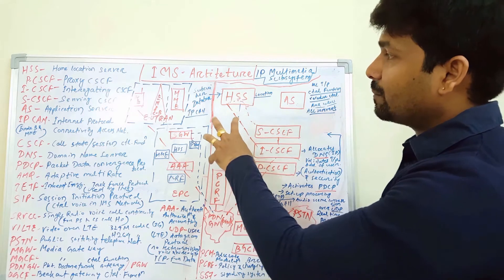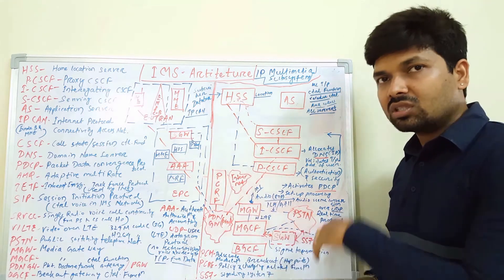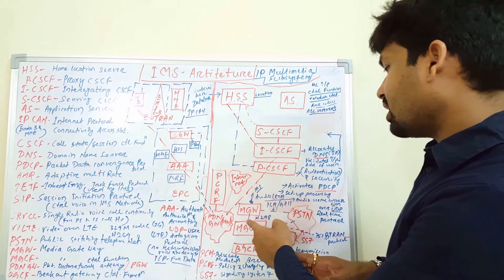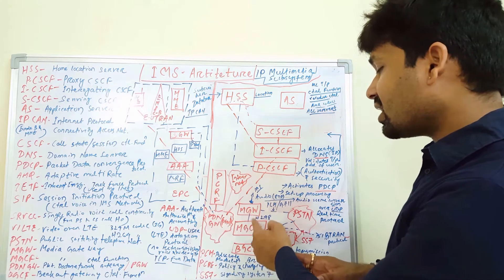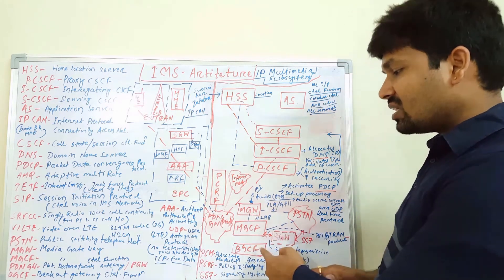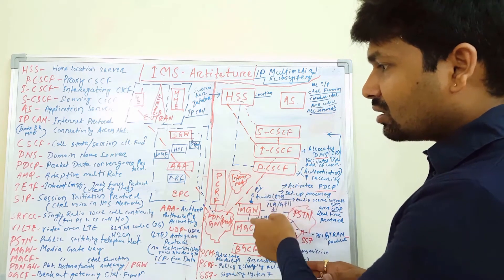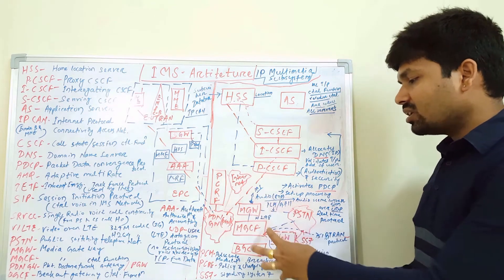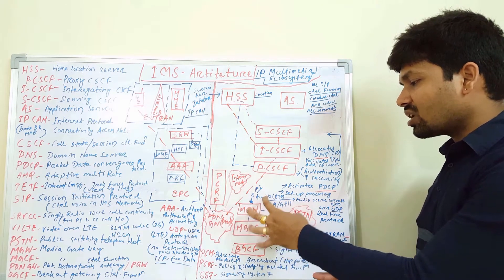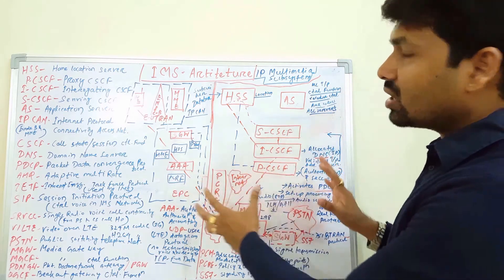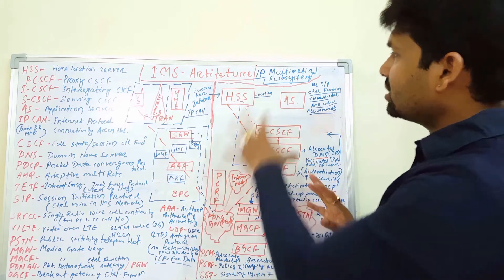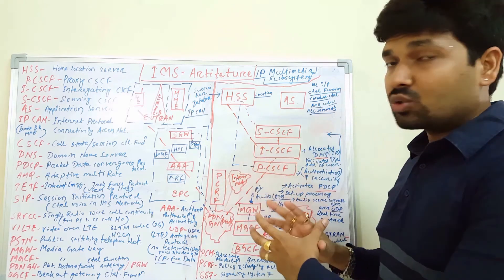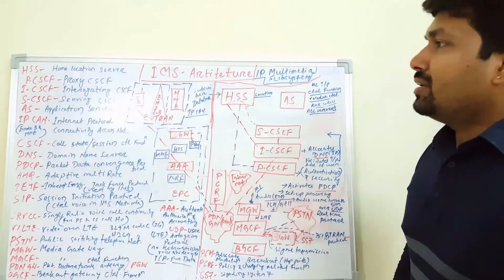If we establish a call from one network to the PSTN, or the public switch telephone network, we will require the MGCF — media gateway control function — and the BGCF, which is the breakout gateway control function. These are the elements required when going out of our own network. Those are all the important entities to discuss in IMS.